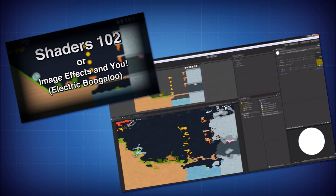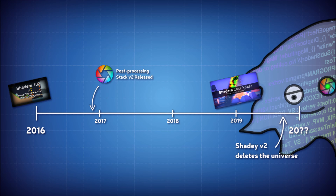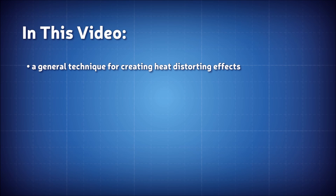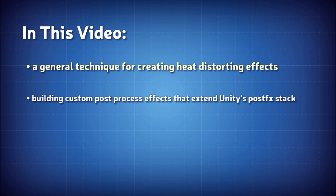Heat distortion was actually an effect I mentioned in one of my earliest videos, Shaders 102. And just like we did back then, we'll implement the effect using post-processing. That video was made about three years ago, and so naturally Unity has matured three years since then. There are now more advanced ways of building post-process effects, specifically integrating them into Unity's post-process stack v2. So this video is going to be about two things: a general technique for creating heat distorting effects, and building custom post-process effects that extend Unity's post-effects stack. Let's start with the technique itself.